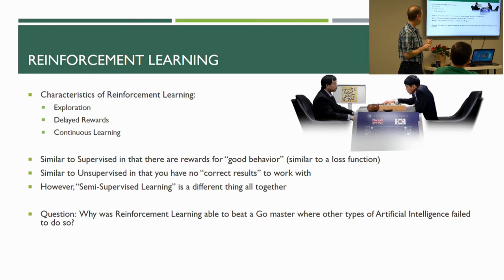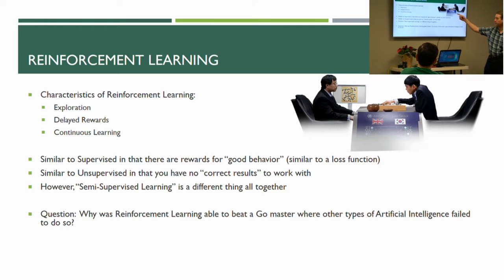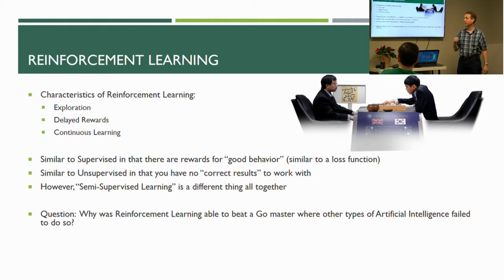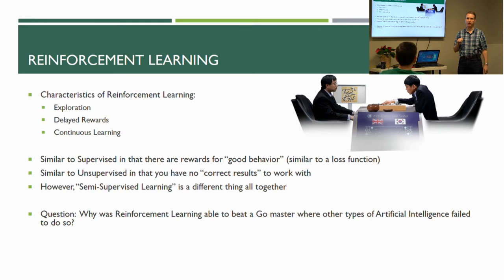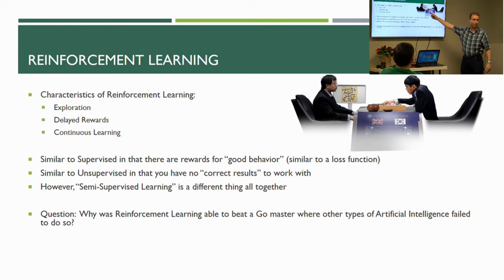Reinforcement learning has some characteristics of both supervised and unsupervised learning, but it's not really in between the two — it's kind of its own thing. It has its own characteristics: exploration, delayed rewards — which turns out to be very important — and continuous learning. In supervised learning, you go through a training phase then a predictive phase. In reinforcement learning, they can continue to learn continuously from data. Let me ask — does everybody know what AlphaGo is?